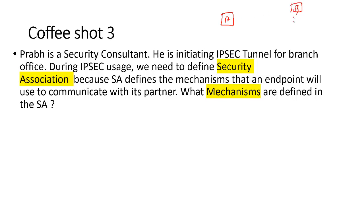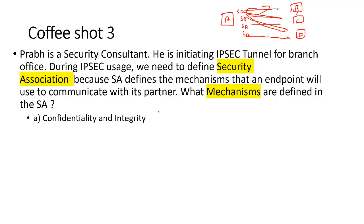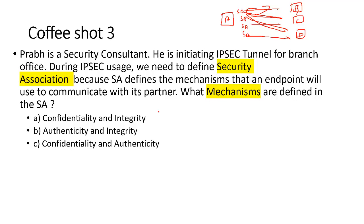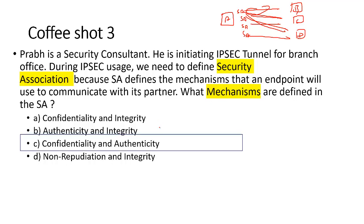Looking at the options: confidentiality and integrity — yes, but no authenticity mentioned. Authenticity and integrity — but confidentiality is missing. Confidentiality and authenticity — authenticity includes integrity and non-repudiation, but confidentiality is again missing. I'll go with answer C: mechanisms defined in the SA include the encryption and authentication algorithm, and whether to use AH or ESP protocol as per requirement. Since authenticity includes integrity, the answer is C.